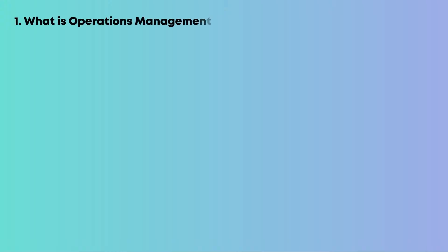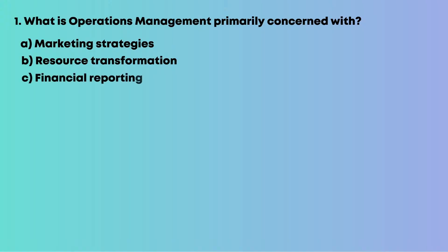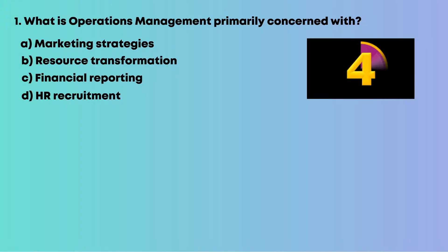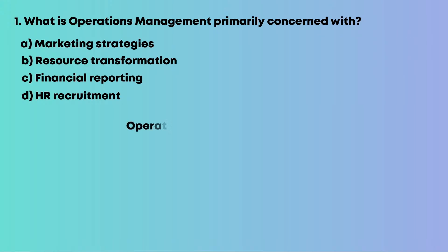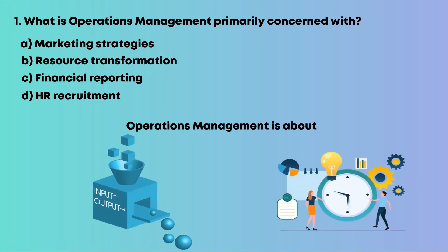Question 1: What is operations management primarily concerned with? Options are: A, marketing strategies; B, resource transformation; C, financial reporting; D, HR recruitment. Give the right answer in the chat box, then I will show the answer. Operations management is about converting inputs into outputs efficiently. So the answer is B, resource transformation.